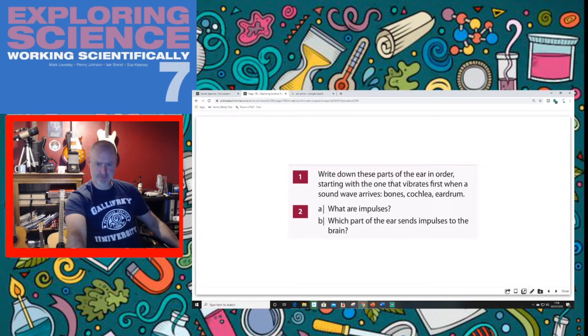When the ear vibrates - sorry, after the sound wave arrives, the eardrum is the first part to vibrate, then it's the bones, then it's the cochlea.